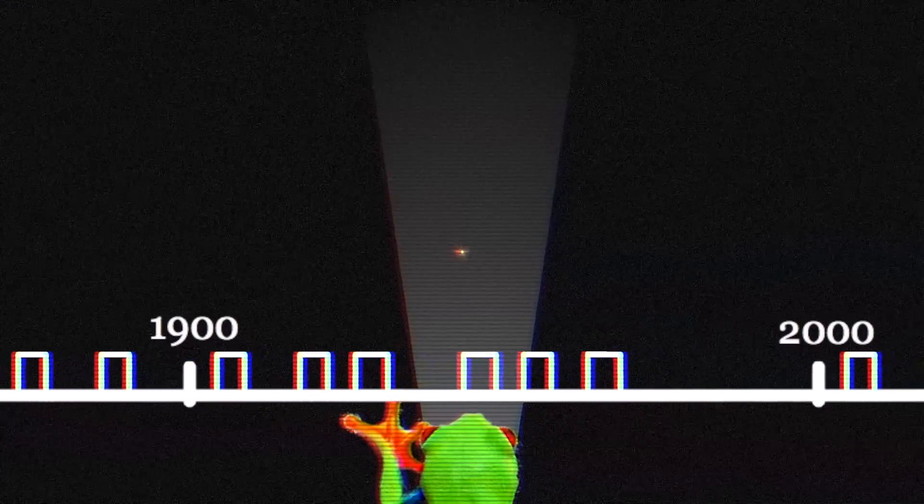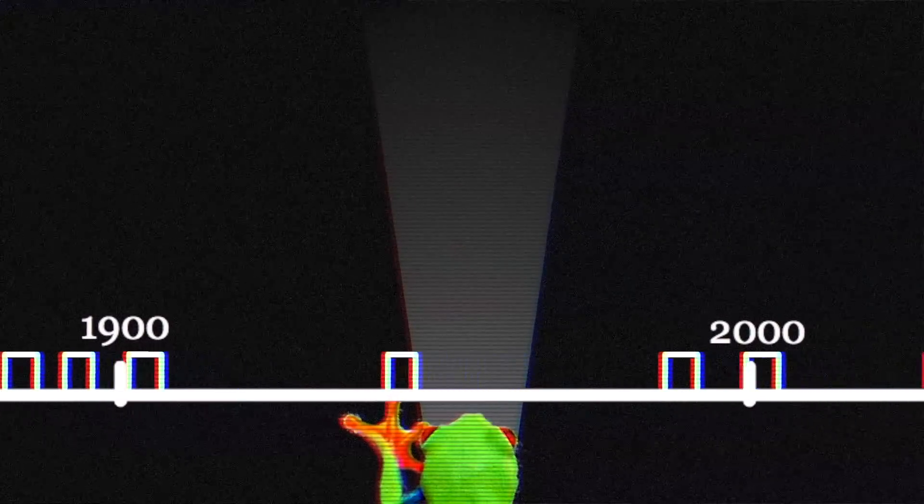Rather, on the smallest scales, it comes in lumps called quanta or photons. So the question is, how does this affect the double slit experiment?